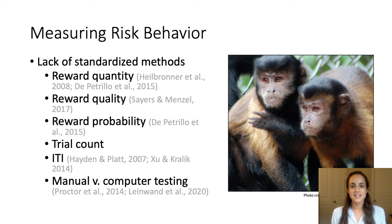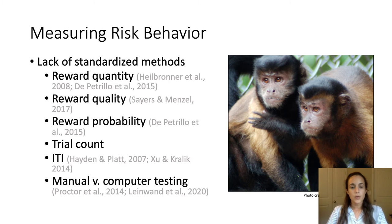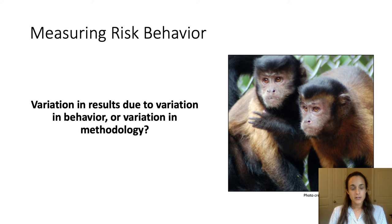There are several ways to measure risky decision-making, yet there's a lack of standardized methods to do so, especially in the study of non-human primates. Some of the factors that differ between studies include changing reward quantities, changing reward qualities — so high value versus low value foods — reward probabilities, trial counts, inter-trial intervals, and whether primates are tested in a manual task or computer task. The question then becomes: are variations in results due to actual variation in behavior, or simply due to variation in methodology?